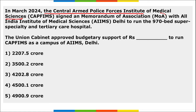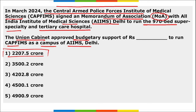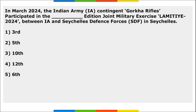The Central Armed Police Forces Institute of Medical Sciences (CAPFIMS) signed a Memorandum of Association with AIIMS Delhi to run a 970-bed super specialty and tertiary care hospital. The Union Cabinet approved budgetary support of ₹2,207.5 crore to run CAPFIMS as a campus of AIIMS Delhi.